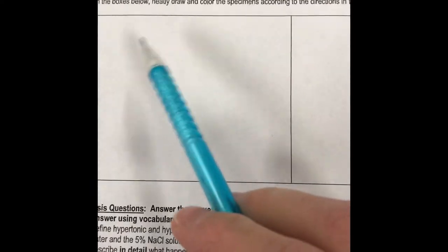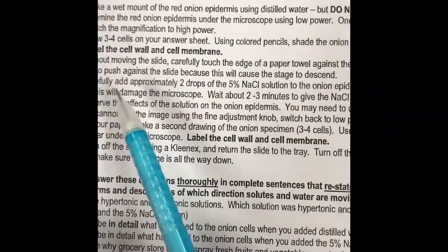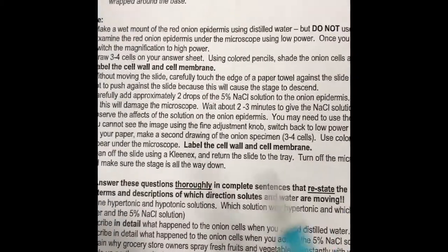This is what you're going to draw. Choose three to four of these cells that are nice and turgid. You might want to pause so you can see the image. Draw your three to four cells off to the left so you can label them. According to the directions, you're going to be labeling cell wall and cell membrane. Make sure to include a title, your total magnification, and shade your drawing the color you see in the video using colored pencils.